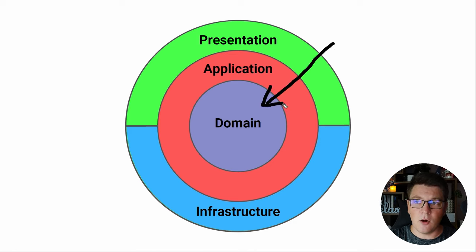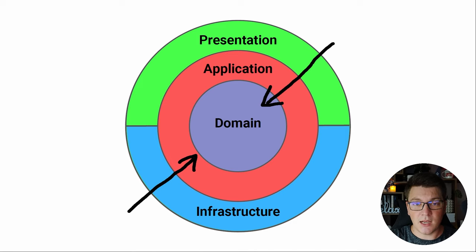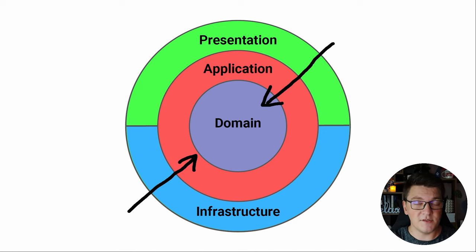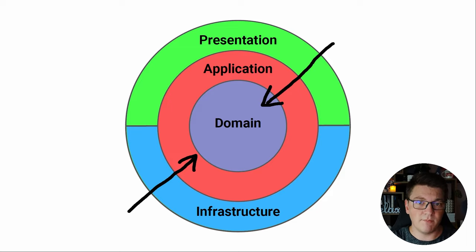Mainly, all of the outer layers are allowed to reference the inner layers, but the inner layers are not allowed to reference any of the outer layers — so the domain layer isn't allowed to reference any of the layers above. However, the application layer, for example, can reference the domain layer. At runtime, this is just another form of layered architecture with some strict dependency rules.